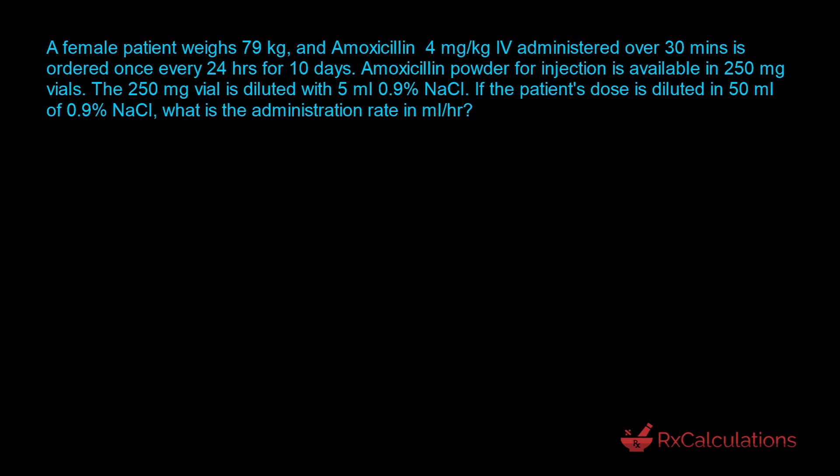Let's unpack the question. The first thing we need to identify is what type of question this is. Because it says administration rate and gives the units milliliters per hour, this highly suggests it is a flow rate type of question. We are going to end up with a rate term — anything per time is a rate — so we have a flow rate because it's milliliters per hour. The first thing we need to do is determine the amount of amoxicillin the patient receives.